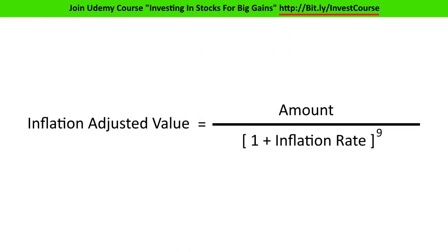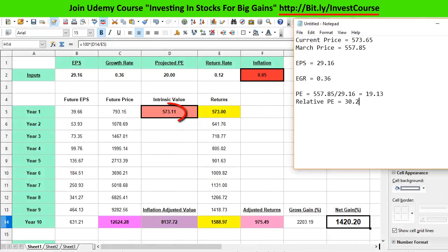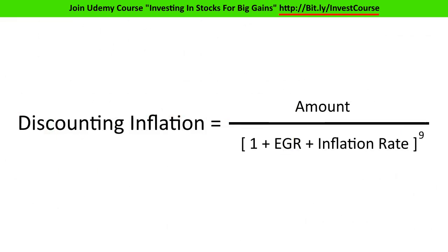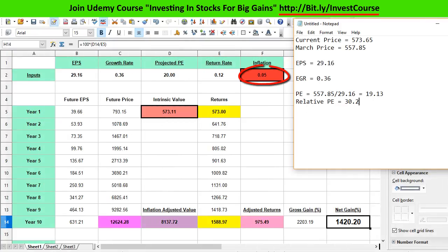The formula to adjust profit for inflation is: inflation-adjusted profit = amount to be adjusted ÷ (1 + inflation rate) raised to the power of the number of years passed, which in our case is 9. The value 573 that you see here is our intrinsic value. The formula is very similar to the previous one — we only add EGR to the inflation rate. One more thing to note: we assume the inflation rate remains the same for all 10 years. At present, India's inflation rate is 5%, and that is what we assumed.